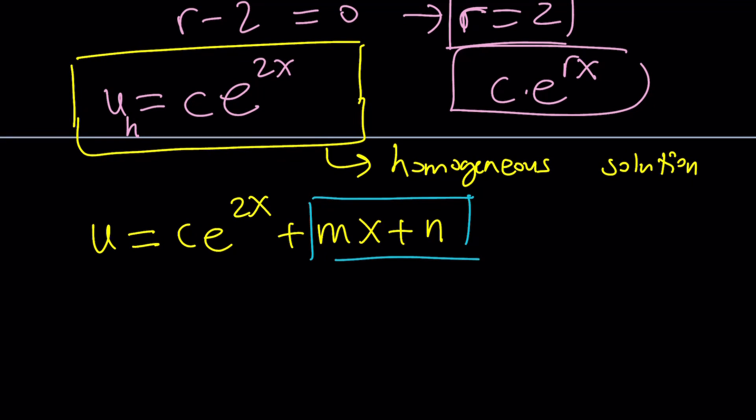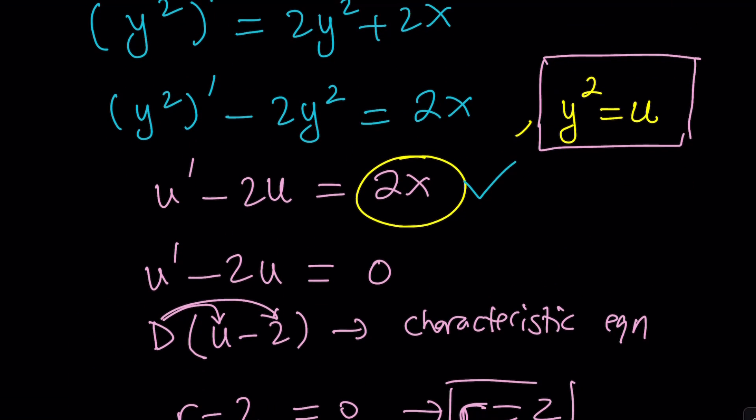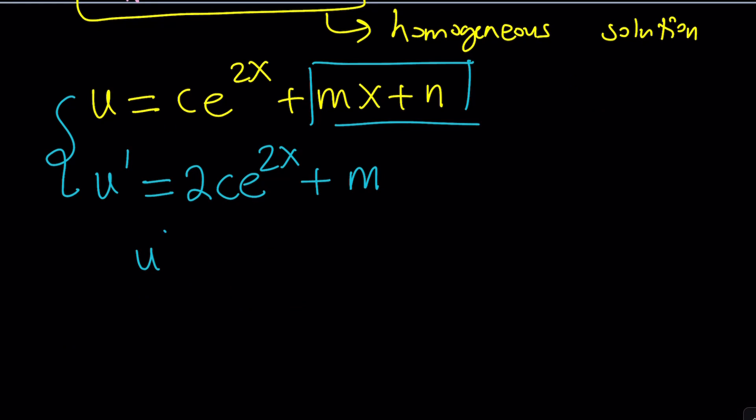Here's what we're going to do. We're going to differentiate this. The derivative of ce to the 2x is just 2c times e to the power of 2x. Plus, the derivative of mx is m. Since m is a constant, m and n are real constants, the derivative of n is 0. Now, I got u and u prime, what am I going to do with those? Plug those into the non-homogeneous equation. So, u prime minus 2u is going to be 2x.